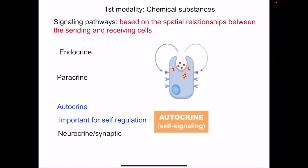Autocrine signaling is important for self-regulation. Here, the chemical is released by the cell and acts on the same cell — so the receptors for the chemicals are present on the same cell. An example is the release of chemicals by helper T cells: it releases chemicals that act on cytotoxic T cells and B cells, but also releases chemicals that act on itself. Similarly, in certain neurons, neurotransmitters are released that act on the post-synaptic neuron, but can also act on the same presynaptic terminal from which they were released, regulating further neurotransmitter release.